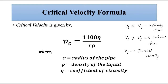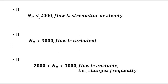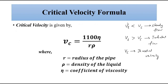So there are two important parameters that determine whether liquid flow is turbulent or steady: first, Reynolds number, and second, critical velocity given by the formula V_c = 1100η / (rρ). If velocity is less than V_c, the flow is steady; if greater than V_c, it is turbulent. I hope you liked this video. Please subscribe to Engineering Tutorial for more videos related to engineering, science, and technology.